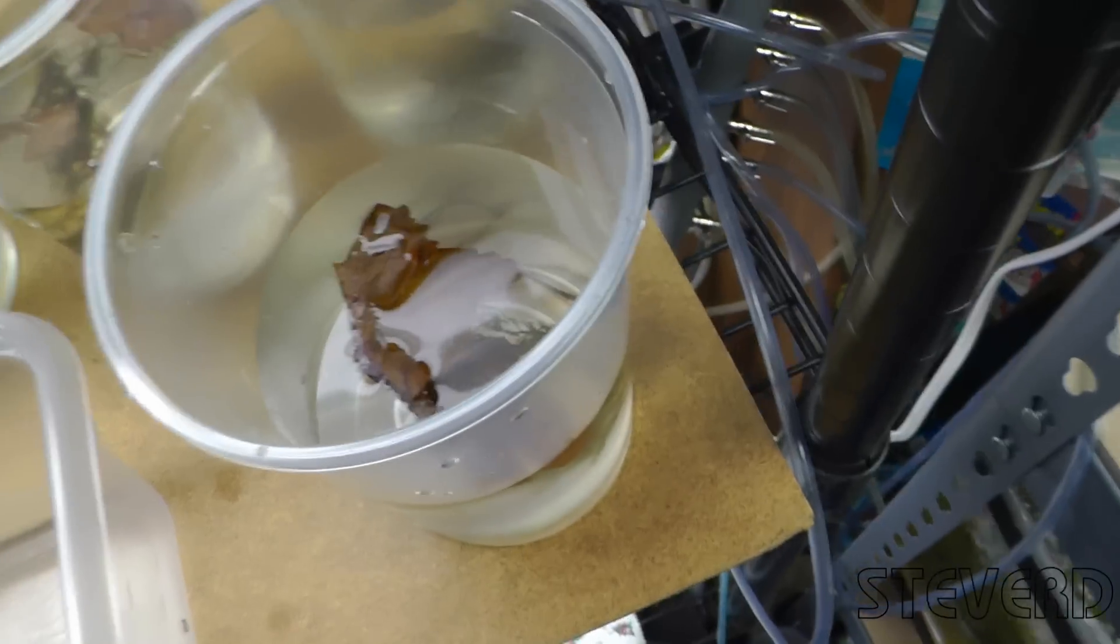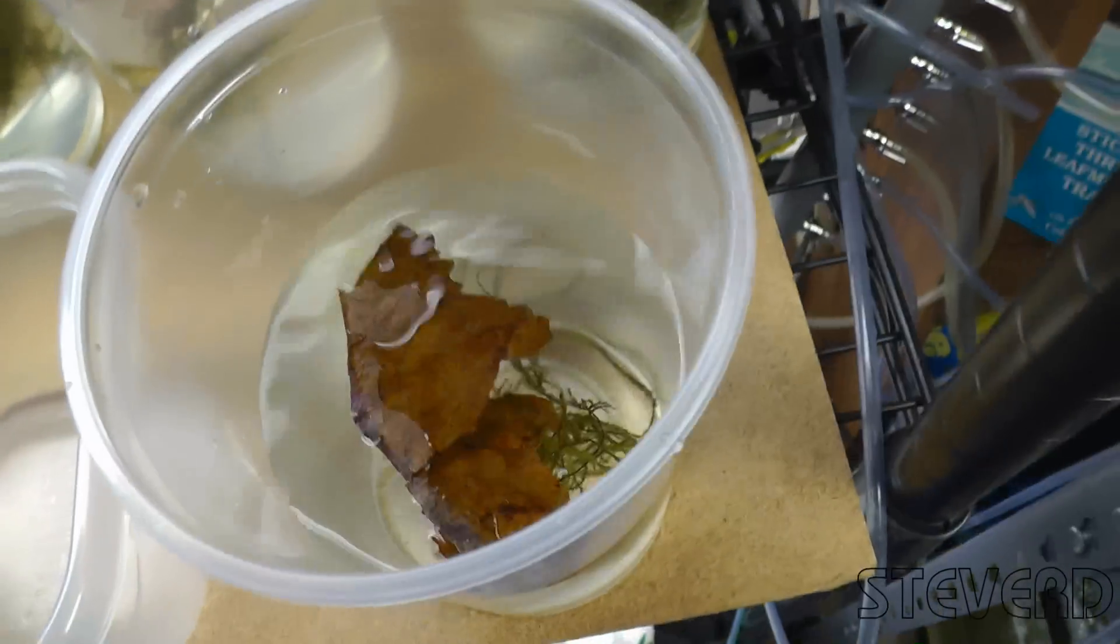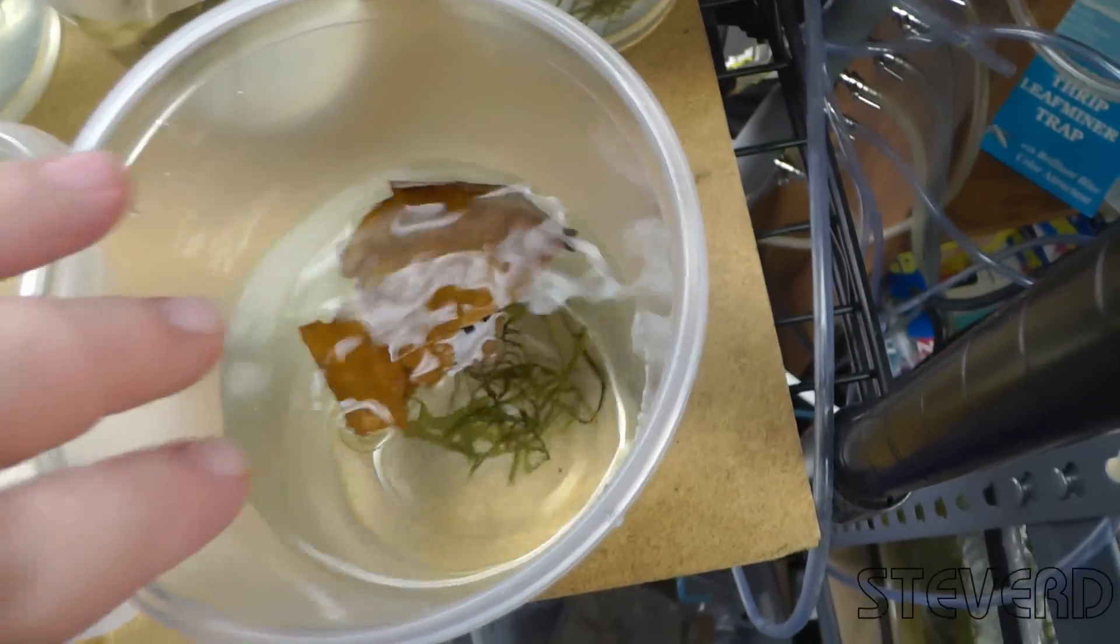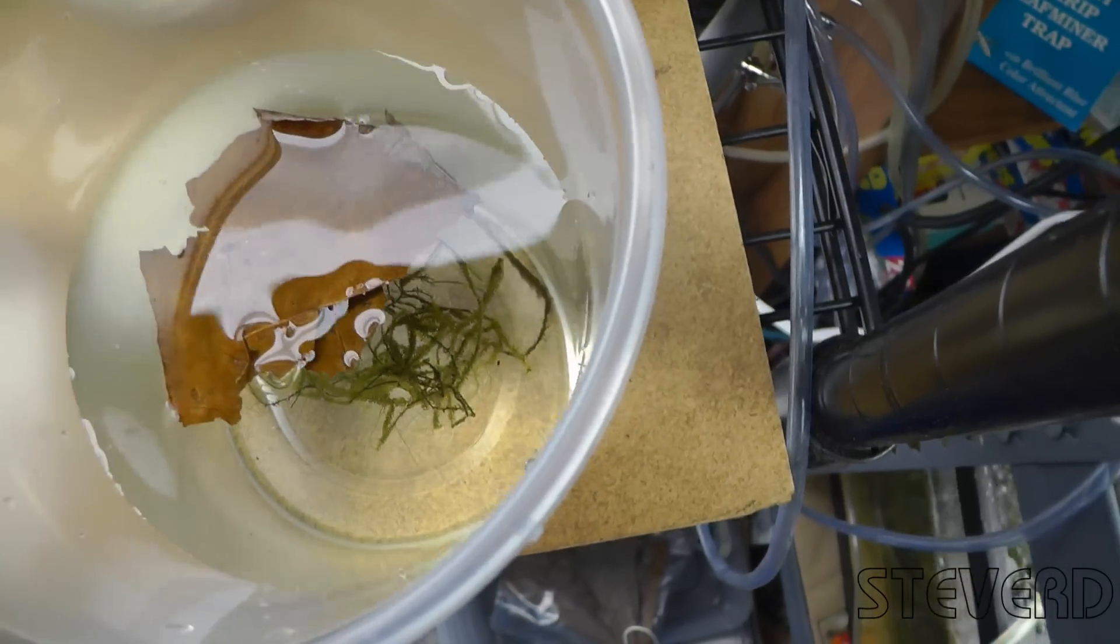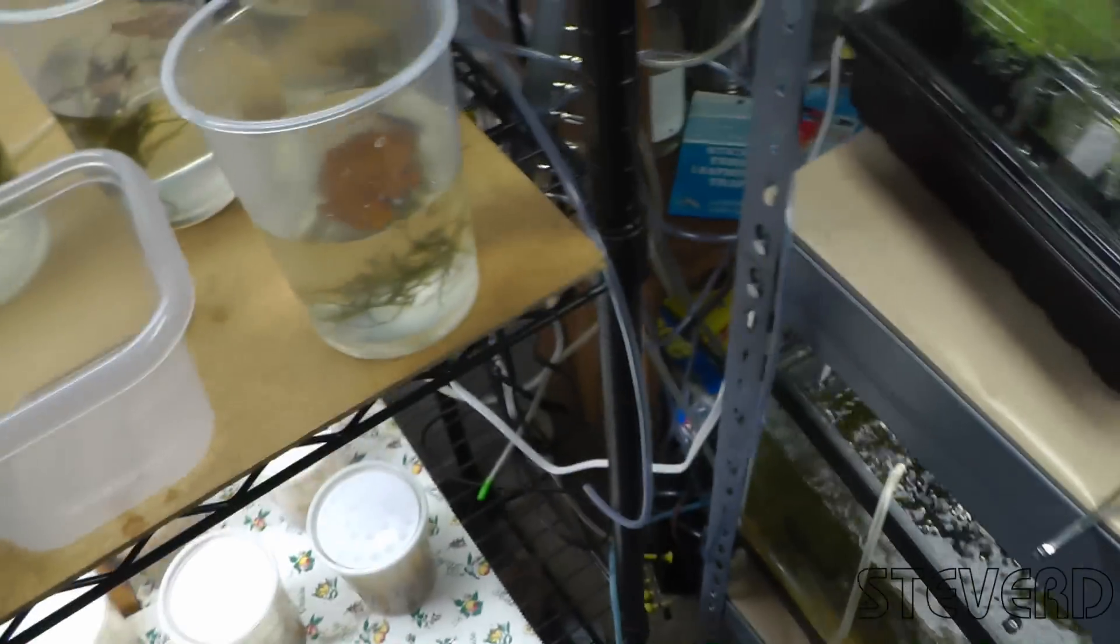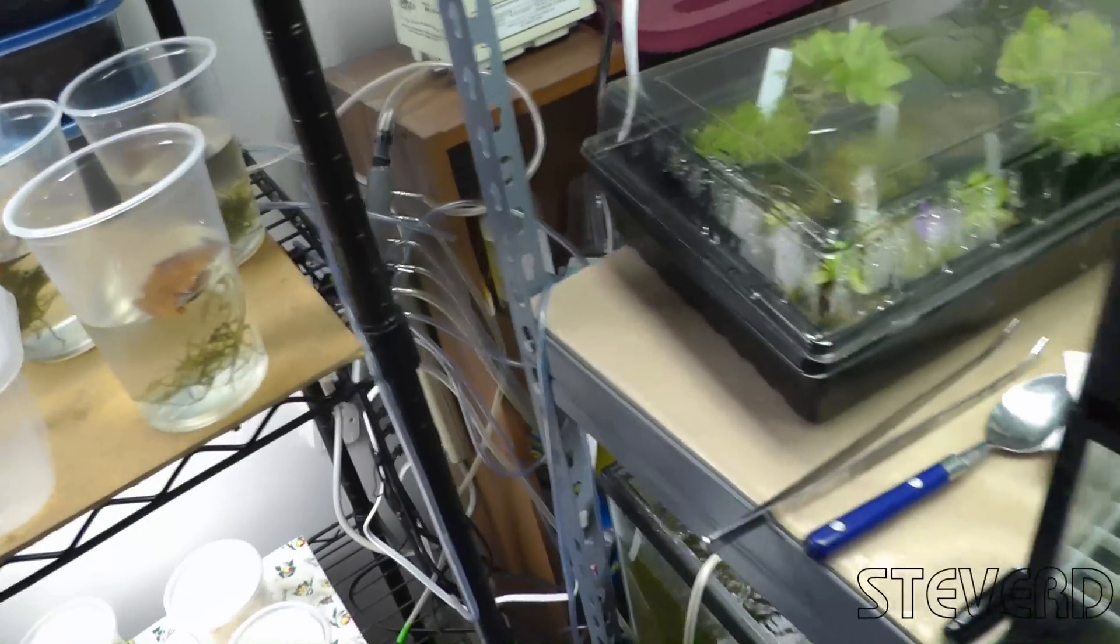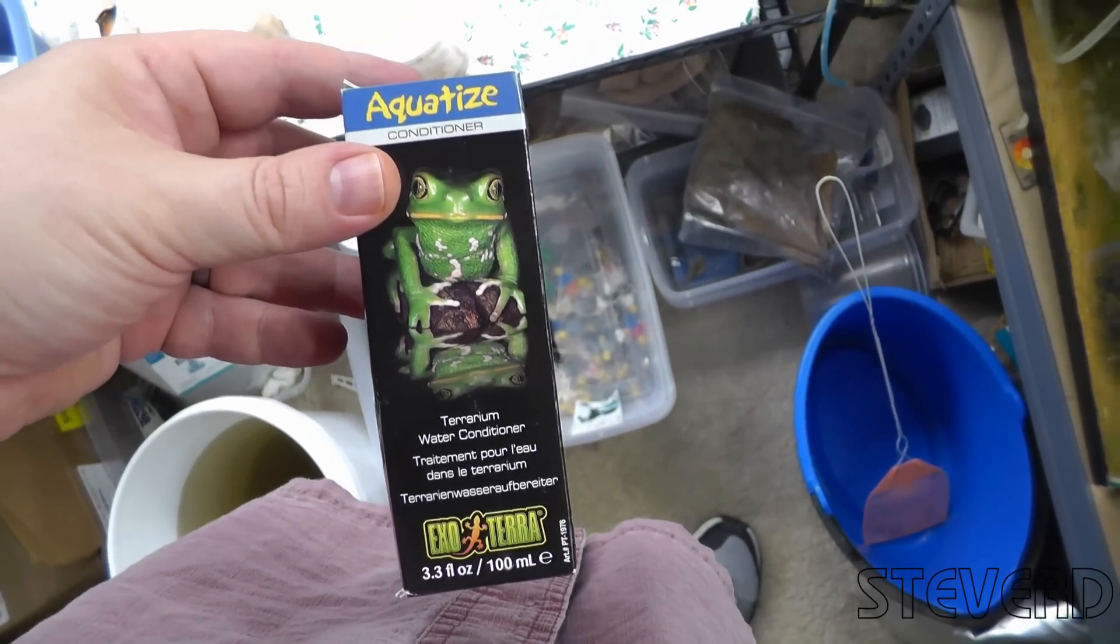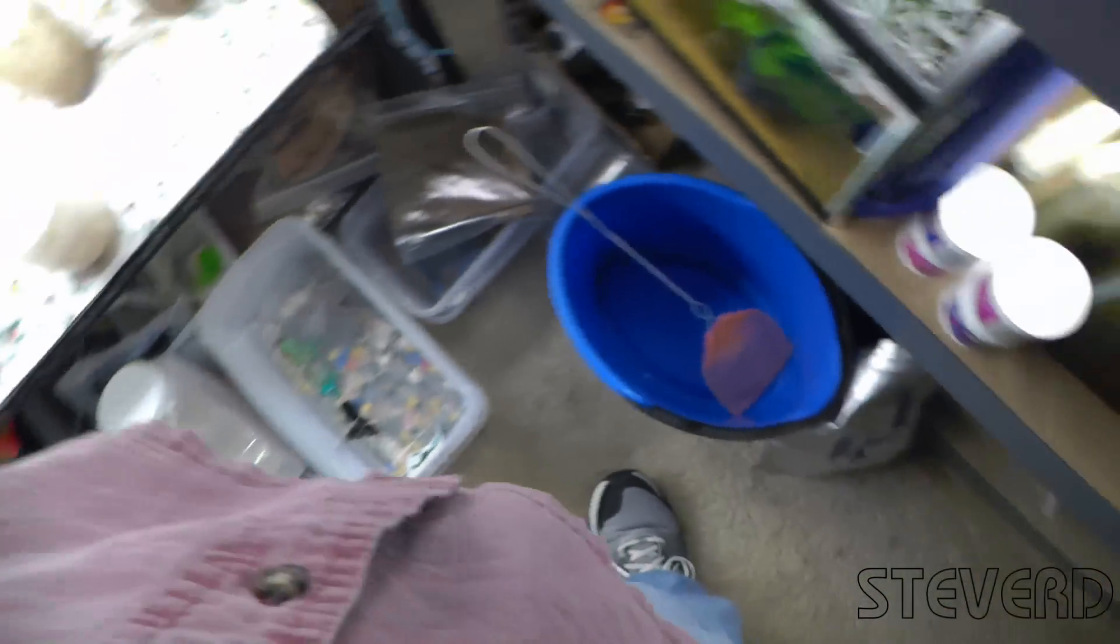We have some reverse osmosis water, a little Indian almond leaf, a little bit of java moss, and a few drops of this stuff. Actually it's like two drops per 32 ounces, something like that.